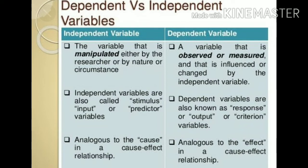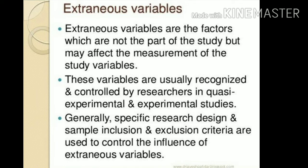Extraneous variables are variables which have an effect on the dependent variable but are not part of the system. For example, when studying sleeping hours and the time taken to complete a task, there can be many other variables that affect the time taken, such as mood of the employee, his willingness to complete it, any other work he has, and his health. Since we are checking the effect of sleeping hours on working efficiency, other variables are excluded from the system — so these are all extraneous variables.